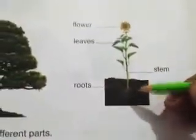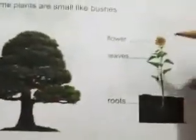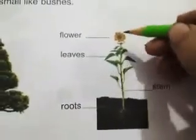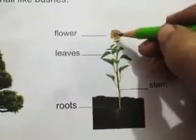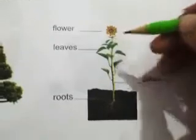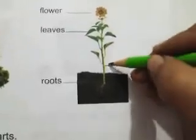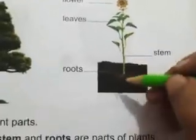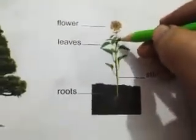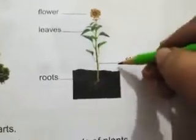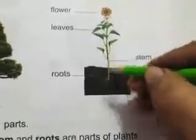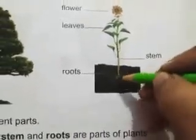The parts of the plant are: flower, leaves, stem, and roots.